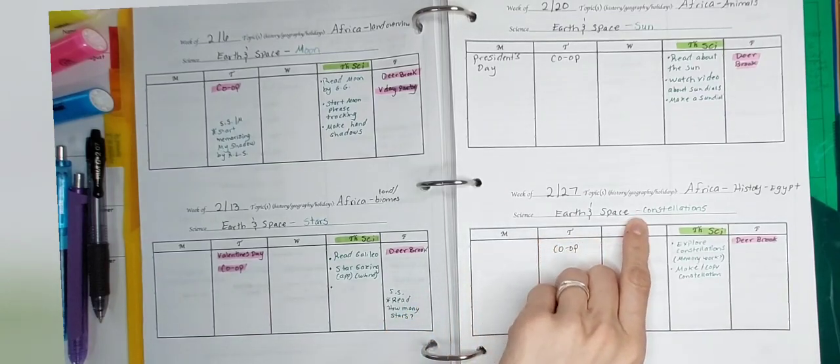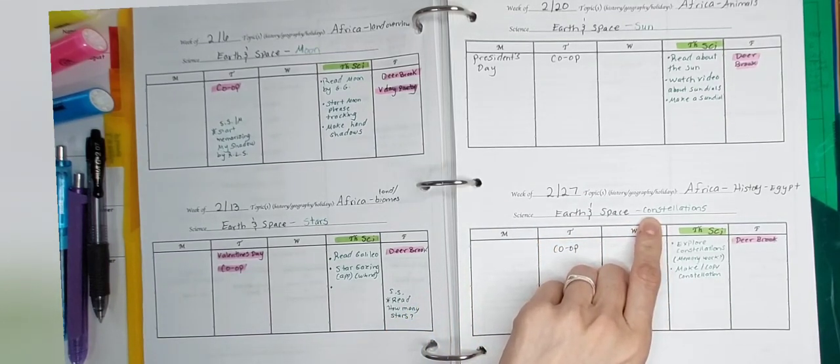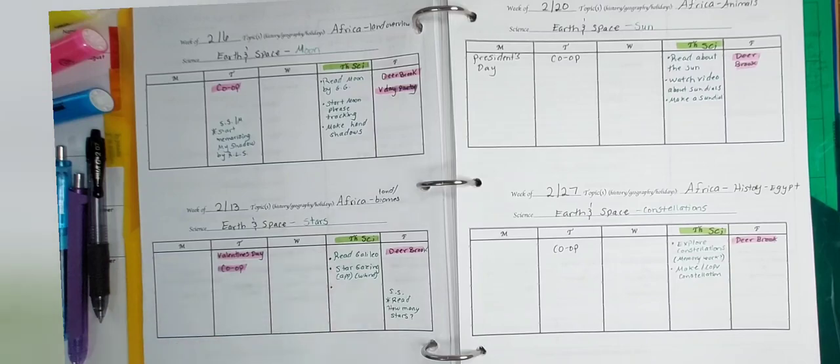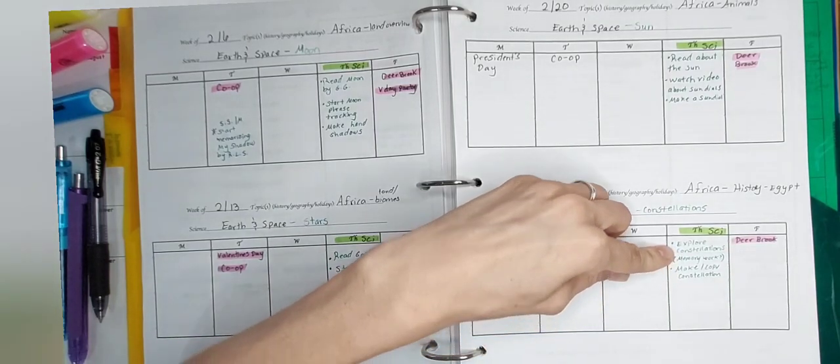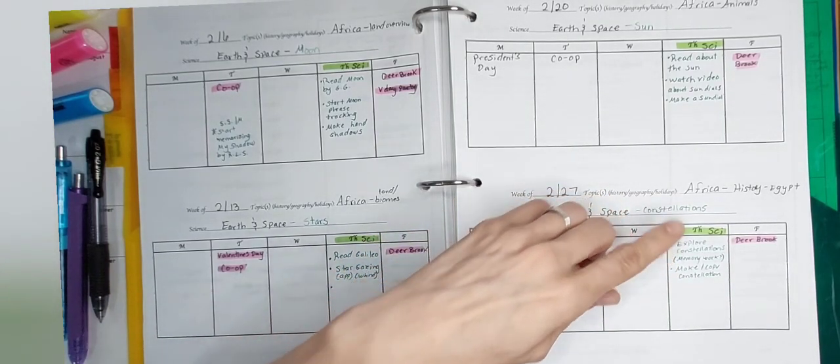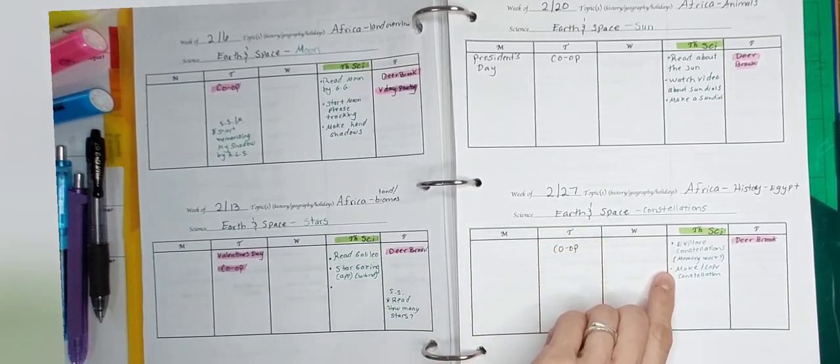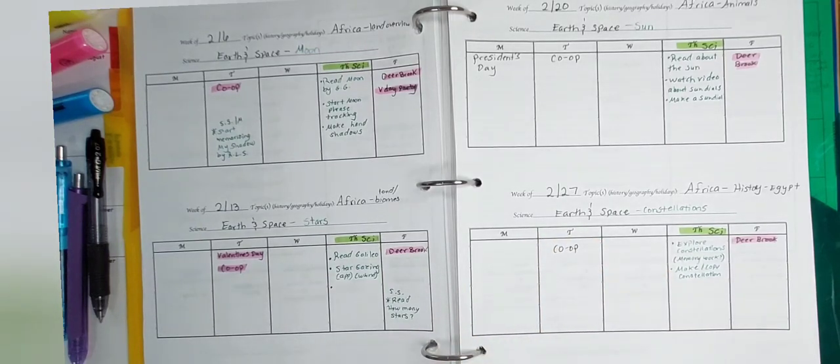And then week four, we'll do earth and space, the focus being constellations, connecting back to the stars. We'll explore constellations with charts, videos, or a book. Then we will make or he can copy a constellation. So he can make one of his own and name it or copy one of his favorite constellations using a black piece of construction paper, laying out some foil sticker stars and connecting them with white chalk on the black paper.